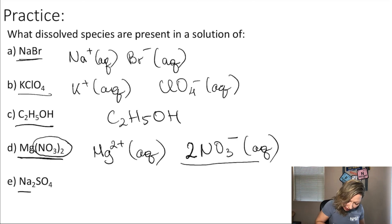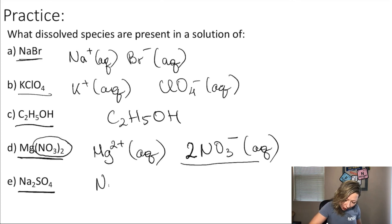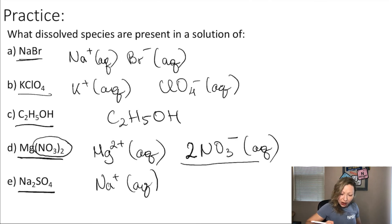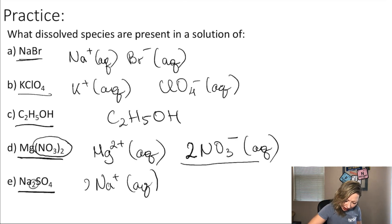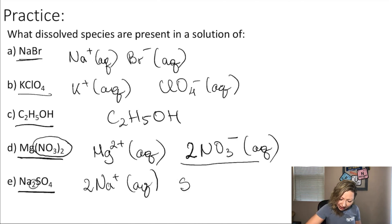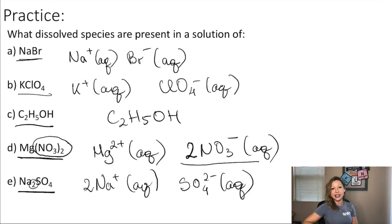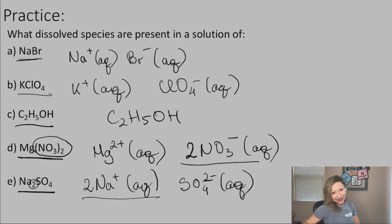What about the last one — sodium sulfate? We are going to form sodium ions, Na⁺. How many sodium ions? Two, because of the subscript two. And how many sulfate ions? Only one. The sulfate ion is SO₄²⁻, and this is also aqueous. I hope this makes sense — solutions are fun! See you in the next video.